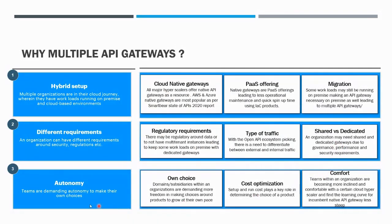Autonomy is also a major factor — teams within an organization and subsidiaries want to choose their own platforms. There can be budget and cost optimization considerations as well. Finally, there is a comfort factor: as teams work in a specific ecosystem like Azure or AWS, they get more comfortable and tend to prefer the native gateways of that hyperscaler platform.